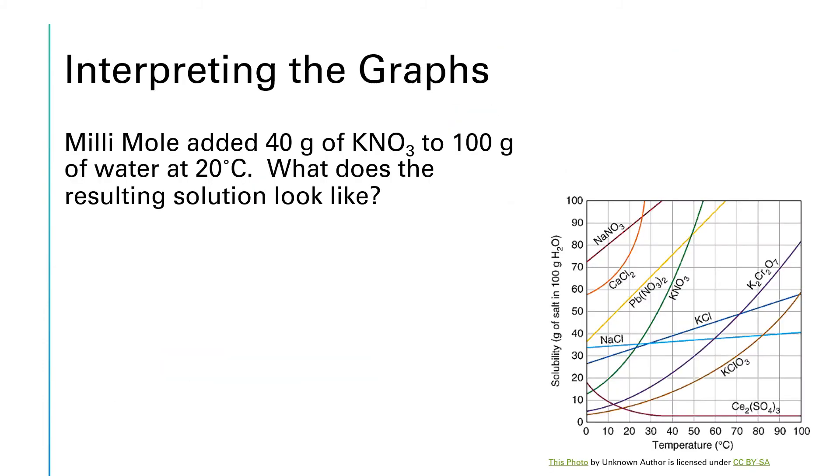Let's see if we can answer this question. Millimole added 40 grams of potassium nitrate to 100 grams of water at 20 degrees C. What does the resulting solution look like? All right. Well, just to try to be able to mark up this graph a little bit better, let me kind of sketch out the potassium nitrate curve.